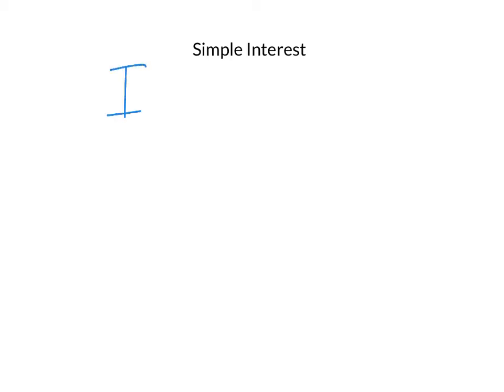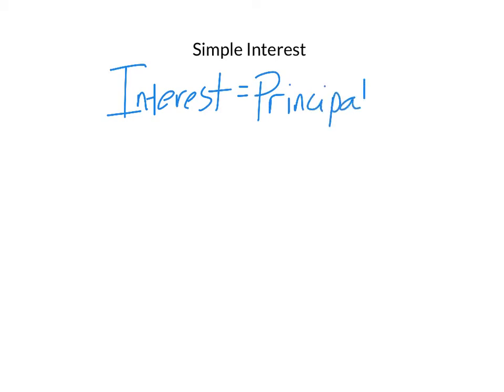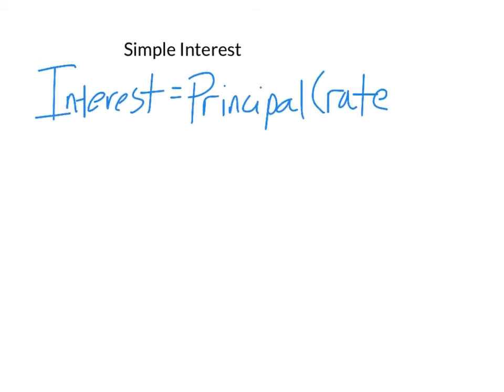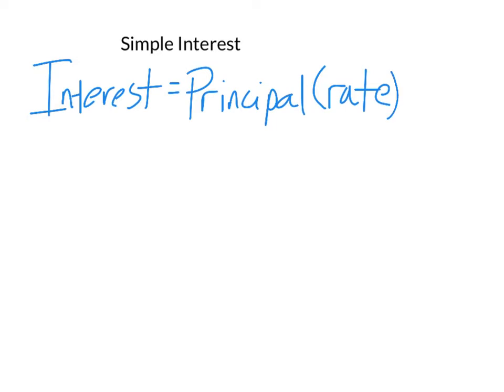Simple interest has a simple equation or formula. It is: Interest equals the Principal times the Rate times the Time.